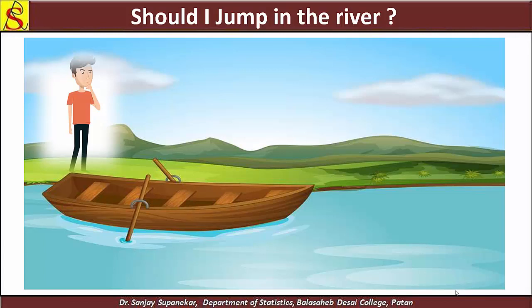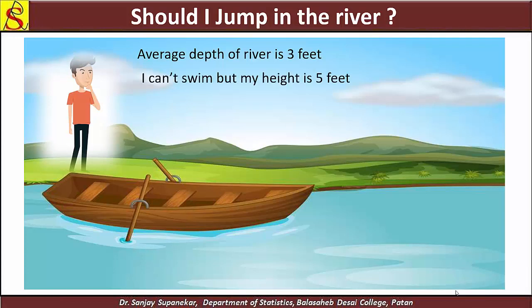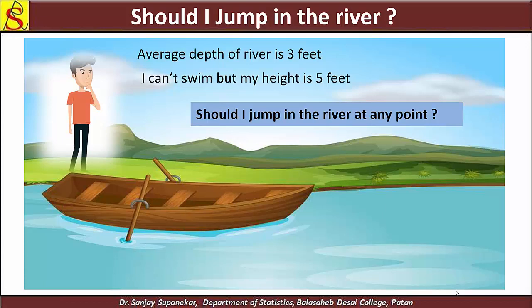Consider this example: the average depth of a river is 3 feet. I cannot swim, but my height is 5 feet. Should I jump into the river at any point? This is an important question — should I cross the river based only on the average depth?